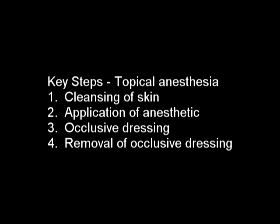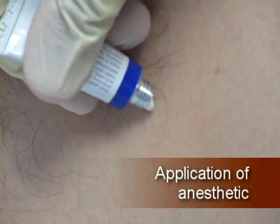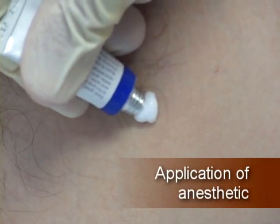The key steps for topical anesthesia include alcohol cleansing, application of topical anesthetic, and use of an occlusive dressing to cover the area, followed by removal of the cover in 30 minutes to two hours to obtain topical anesthesia of the skin. First, wipe the skin with alcohol to remove surface oils, then apply the topical anesthetic cream to the planned incision area, using one to two grams of cream.